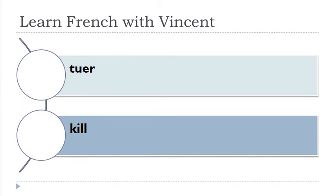Tuer. Remember, 'u' is really pronounced like 'u' — so it's not 'ou', but it's 'u'. Tuer. Tuer.